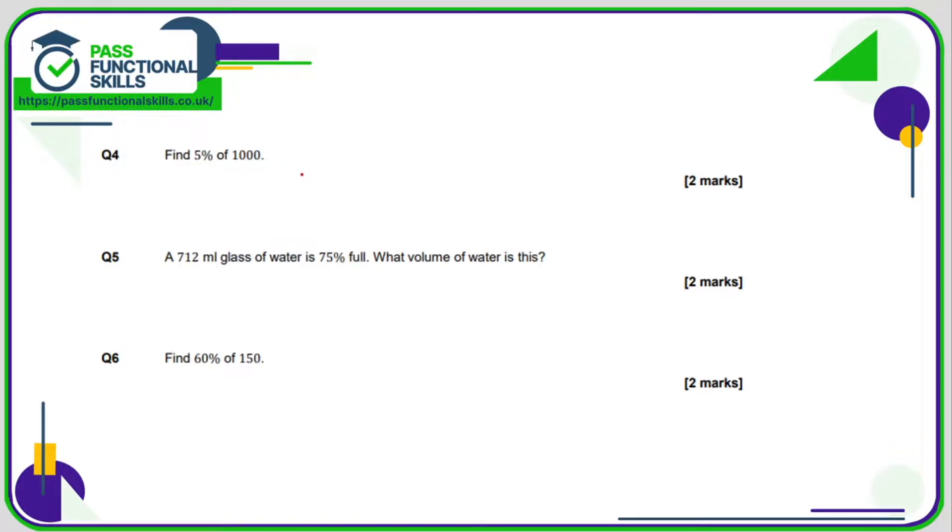Question number 4, we want 5%. Now I'd start off by working out 10%. 10% is this amount divided by 10, in other words chop off a 0. 5% is half of 10%, so if 10% is 100, then 5% is going to be half of 100, so 5% is 50.